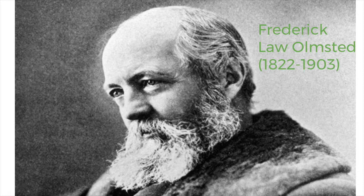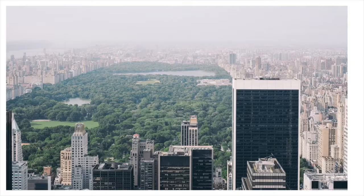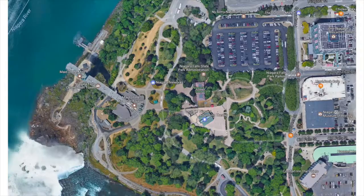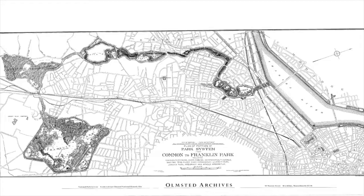A lot of his projects, even if you're not from this country or never visited the United States, you've heard of and probably seen pictures of. He was mostly known for his work designing parks, including the Capitol and White House area in Washington D.C., Central Park in New York City, which he designed with his partner Calvert Vaugh, Niagara Falls State Park, and Boston's so-called Emerald Necklace.